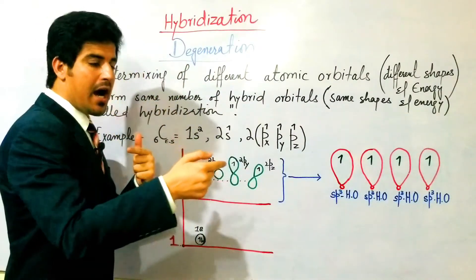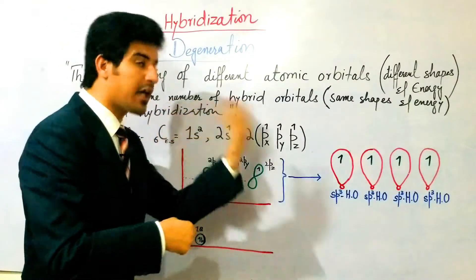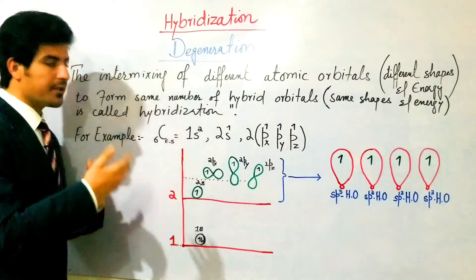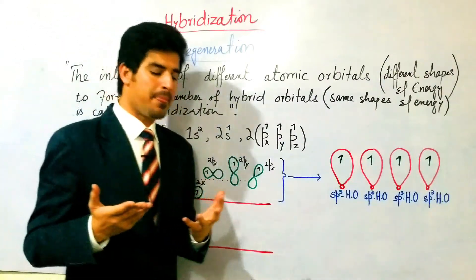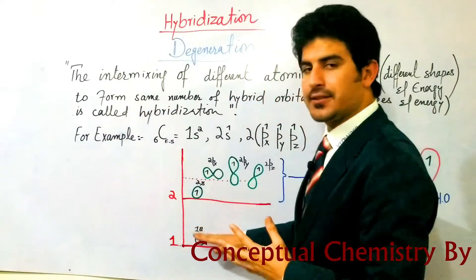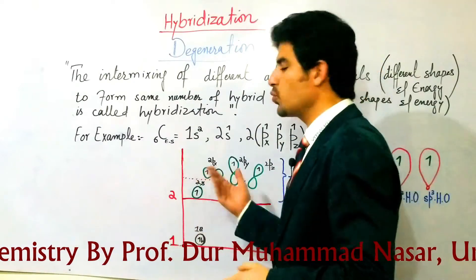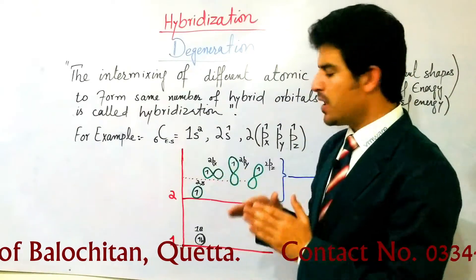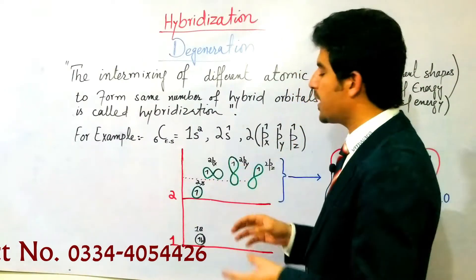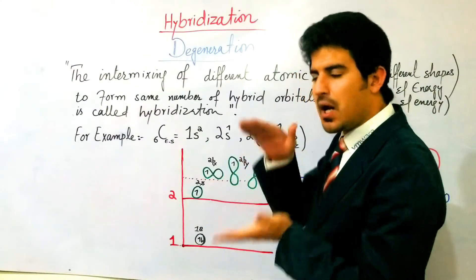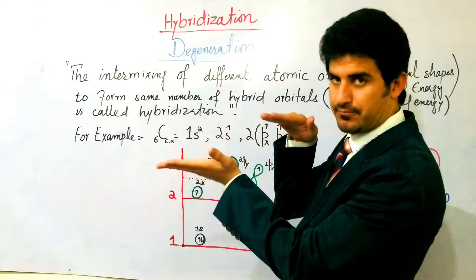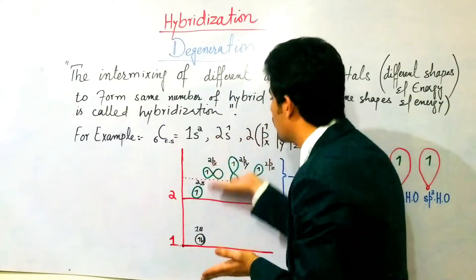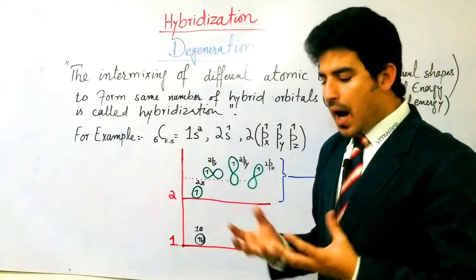How many orbitals are involved in hybridization? I have an energy level diagram. The 1s orbital is not involved. We have 2s, 2px, 2py, and 2pz - four orbitals in the second shell. The s orbital has lower energy and px, py, pz have higher energy.